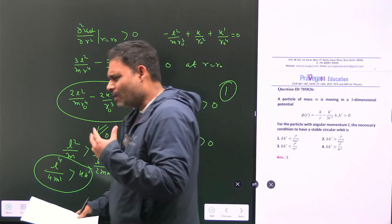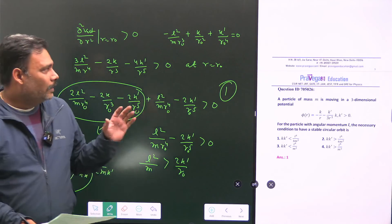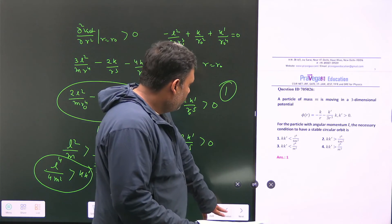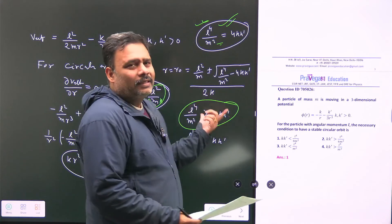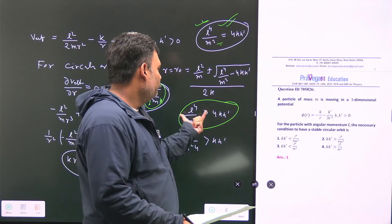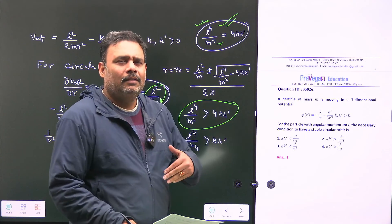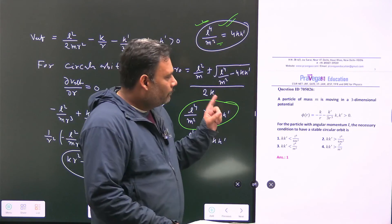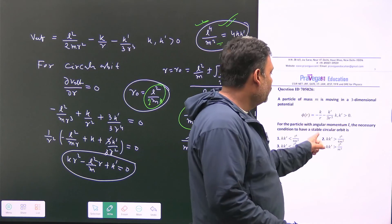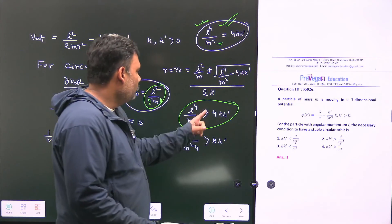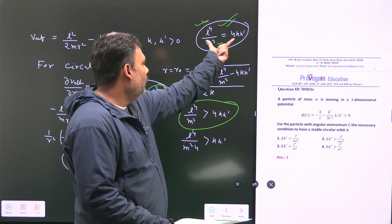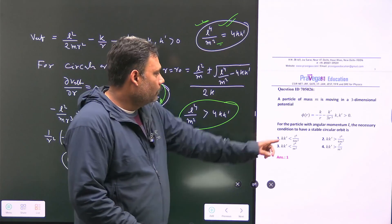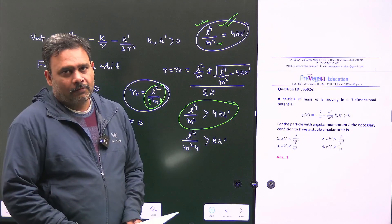So this is a wonderful problem with a lot of analysis involved. In a casual way you might say L⁴/(4m²) > kk' is a sufficient condition, but for the complete solution you have to check stability — both when the discriminant is greater than zero and when it equals zero. In both cases this condition holds, so option number 1 is correct. Thank you.